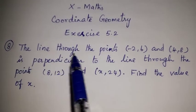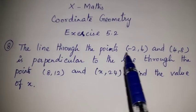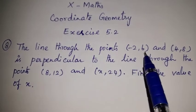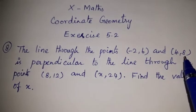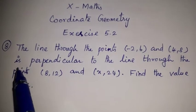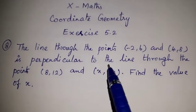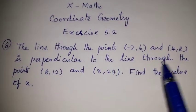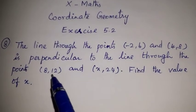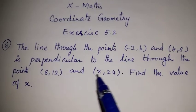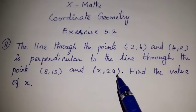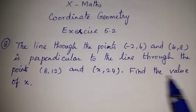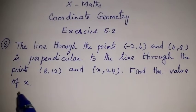The line through the points minus 2, 6 and 4, 8 is perpendicular to the line through the points 8, 12 and x, 24. Find the value of x.